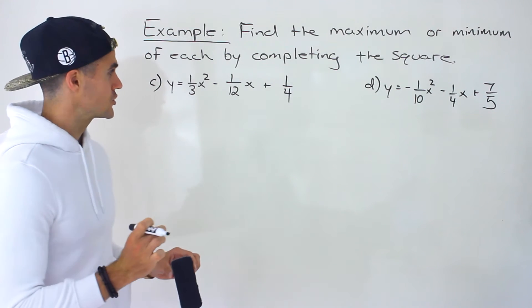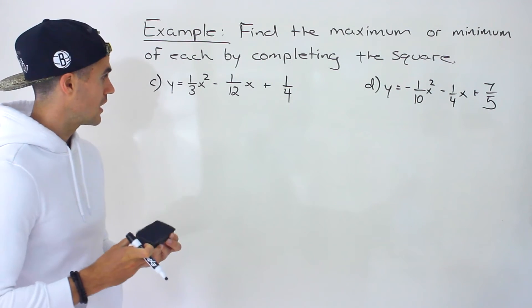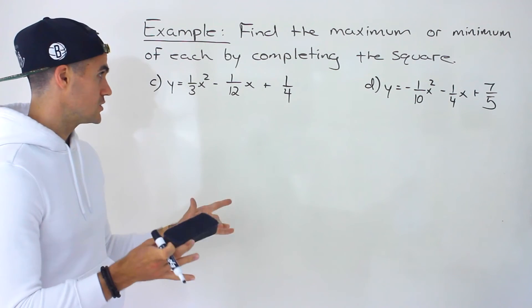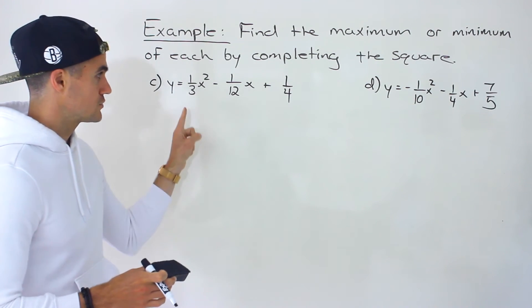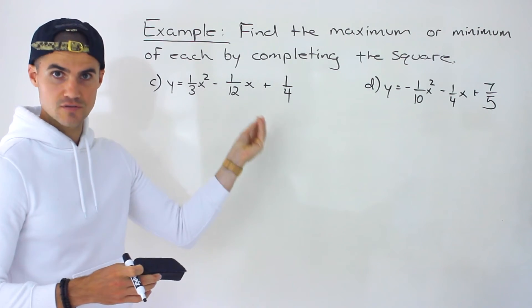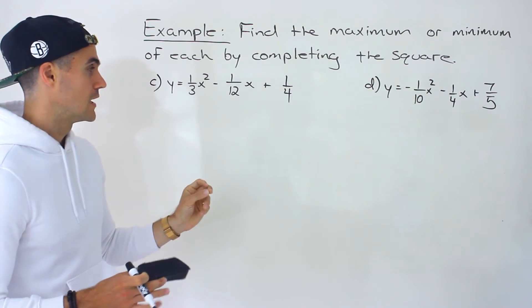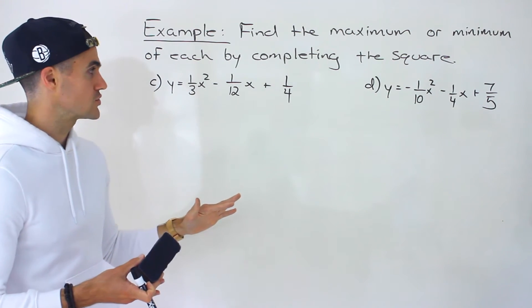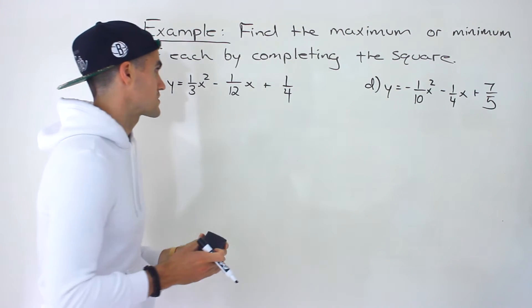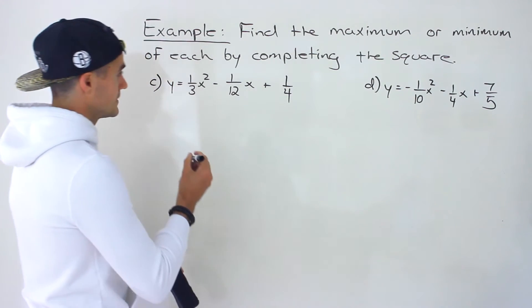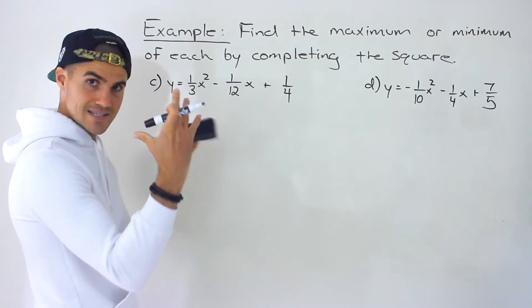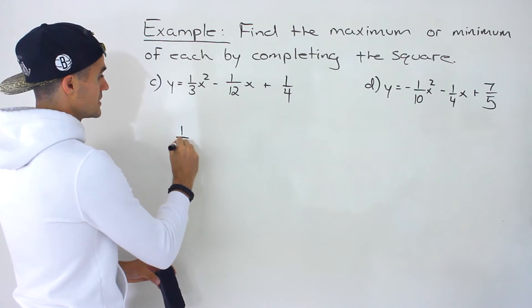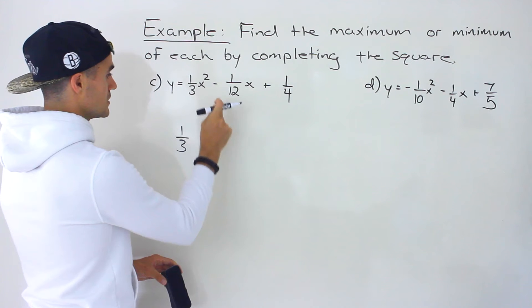Moving on to part c — now we're dealing with fractions, and the algebra is a lot more intense. Your teacher may allow you to convert to decimals and follow the same process, but if they expect the final answer in fractions, that's what I'm going to do here. The same overall process applies — I'll start by factoring out one-third from the first two terms.